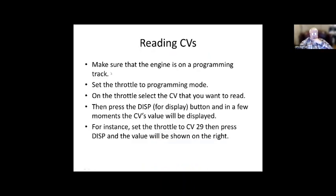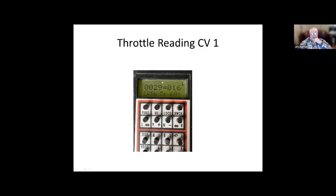If you want to read a CV, make sure the engine is on the programming track and set the throttle to program mode. Then on the throttle, select the CV that you want to read and press the DISP or display button. In a few moments, the CV's value will be displayed. For instance, in this case we're looking at CV 29 and the data is 16. It's fairly simple.